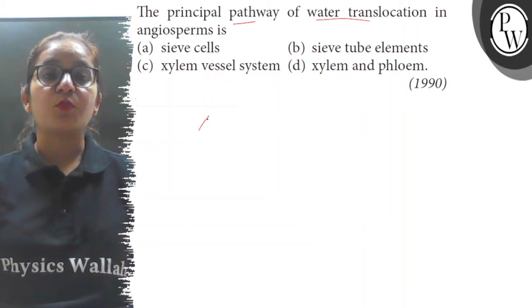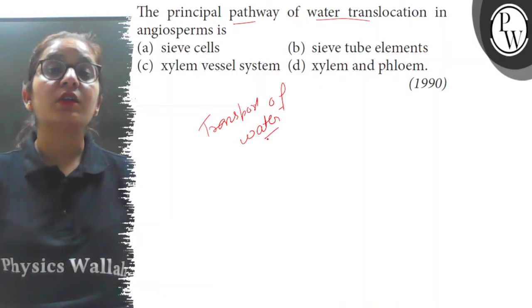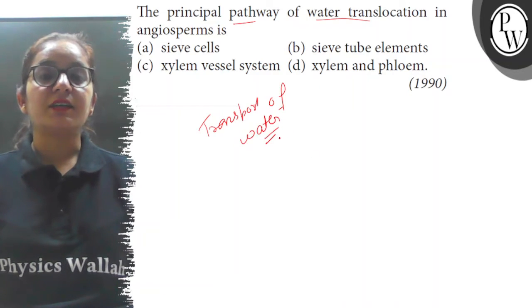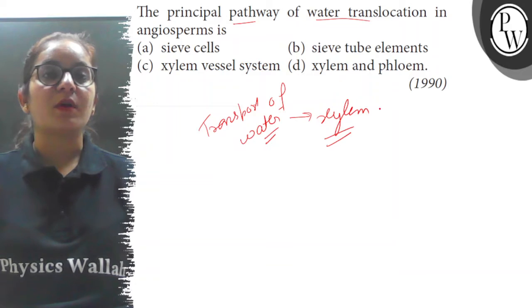So what is the transport of water? Water is absorbed from the root hairs to the roots and transported to the upper parts of the plant through xylem tissue. And in angiosperms, vessels are also present in xylem tissue for the transport.